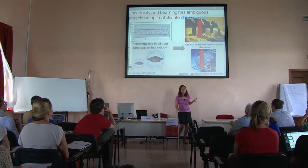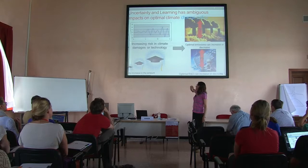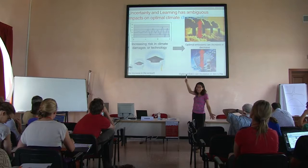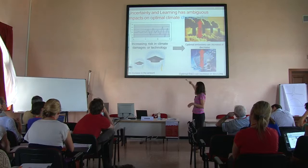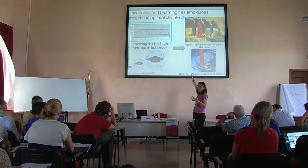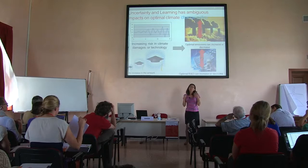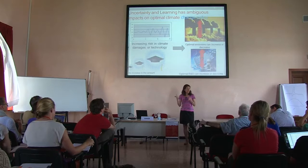This was where we left it last time. There was all this theoretical work, and we said what happens as the uncertainty around climate damages increases? It turns out it's ambiguous — we don't know whether we should abate more or less. As the uncertainty around the outcomes of R&D increases, we don't know whether we should invest more or less. The theoretical work kind of has gone as far as it can go, and we need to go a bit farther to get some answers.